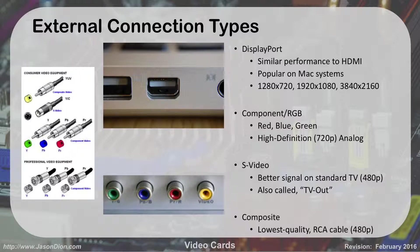Composite is the lowest quality. It is the RCA cable — 480p, standard definition television. It's a single yellow cable. If you're familiar with old Nintendo systems, the three cables coming out the back had white and red for left and right audio, and yellow for video — that's a composite cable. It's called composite because all the video signal is composed onto one single cable. Component, by contrast, breaks out the signal into red, blue, and green — three separate cables — which is how you get higher quality, with three cables carrying the load.